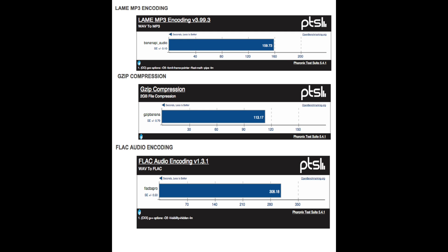Lame MP3 encoding, GZIP compression, and FLAC audio encoding. For WAV to MP3, it took 159 seconds. For GZIP compression of a 2 gigabyte file — seconds, less is better — it took 113 seconds. FLAC audio encoding, WAV to FLAC, it took 308 seconds. Stay tuned for more boards to come.